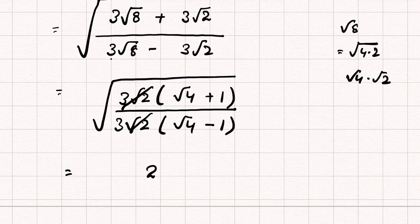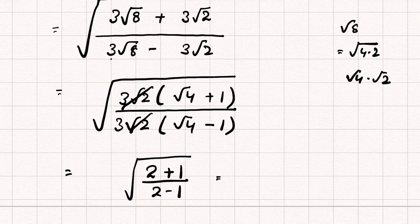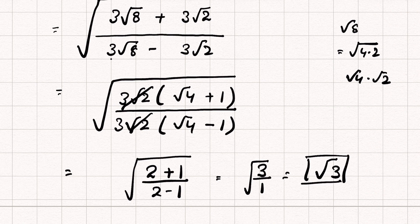Since √4 = 2, this gives us (2 + 1) over (2 − 1) under square root, which is 3 over 1 under square root. Therefore the final answer is √3.